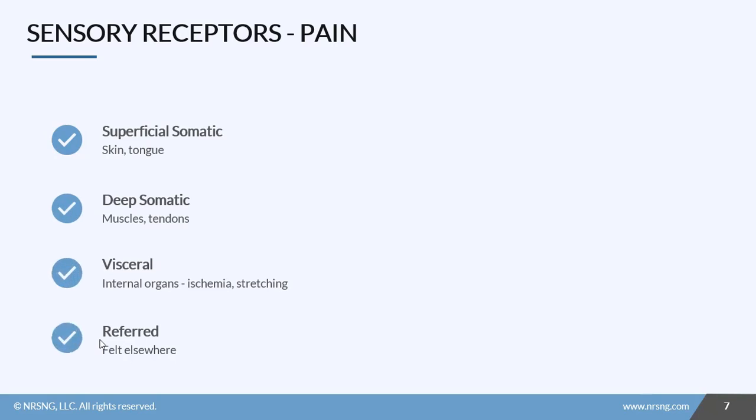Now when we're talking about pain, there's actually four types of pain that we can detect with our sensory receptors. So you need to know about these four types. The first type is superficial somatic pain. When we think somatic, we think skin, muscles, things like that. So superficial is going to be any pain we feel in our skin or our tongue. So this might be things like getting a cut, maybe you've got an ulcer on your tongue, or possibly you burned yourself. So that's superficial somatic pain.